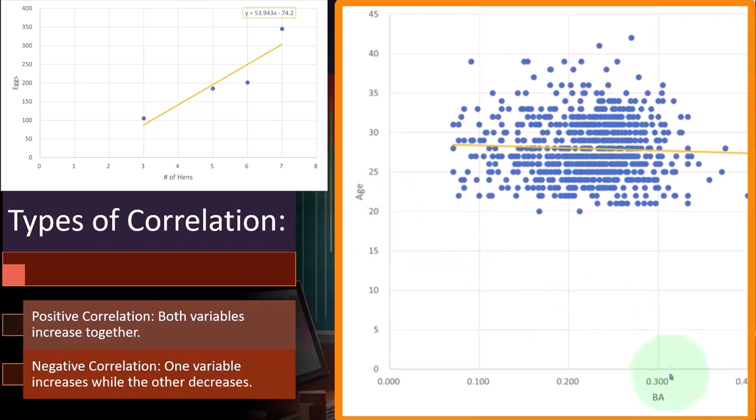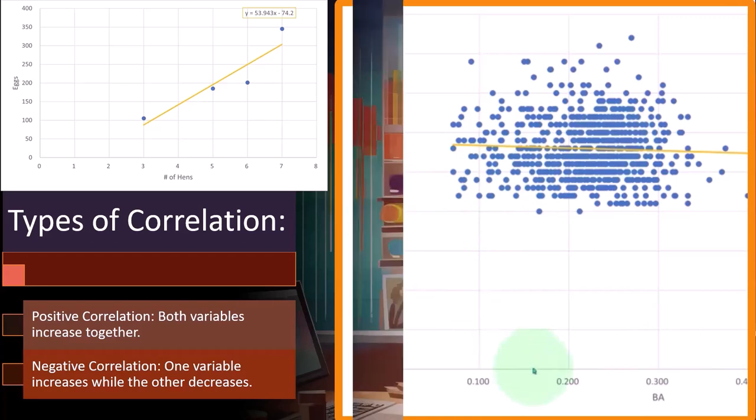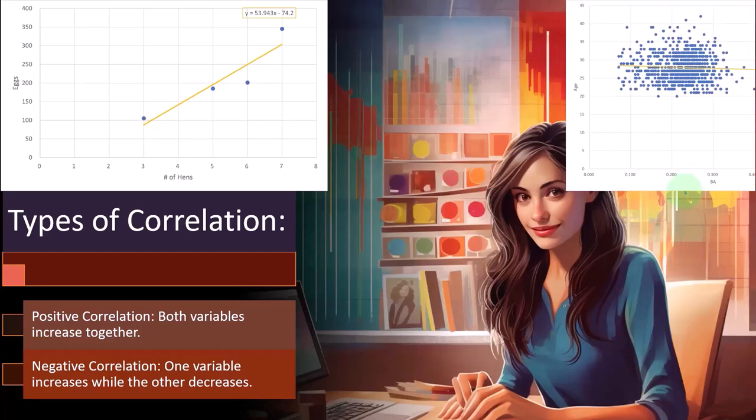But if I reverse these two this way, we would still end up with a negative correlation. So whichever variable we put on either axis, if there's a negative correlation, it'll still be negative. And if it's a positive correlation, it'll still be positive. But by tradition, we'll typically put the independent or what we think is the causal factor on the x.